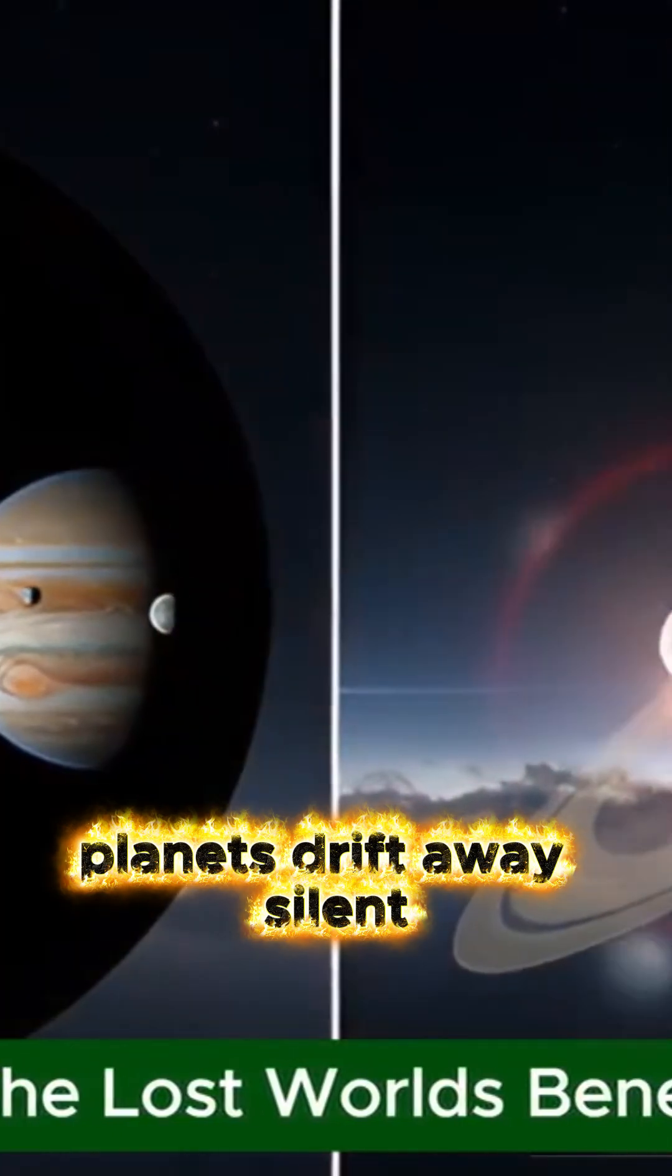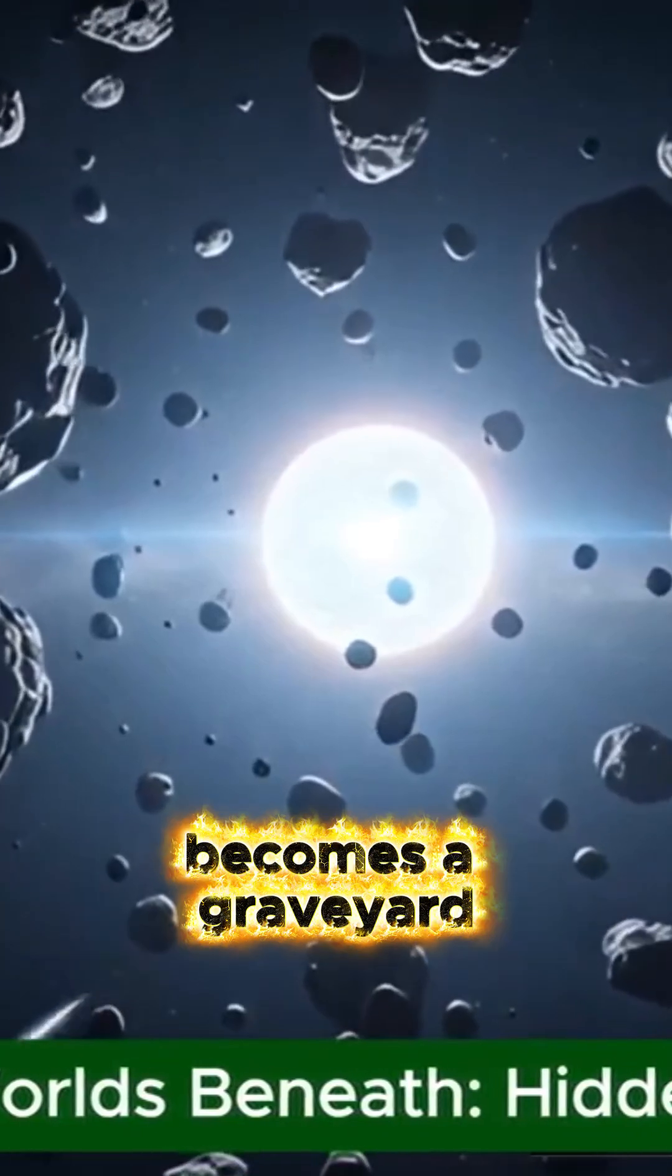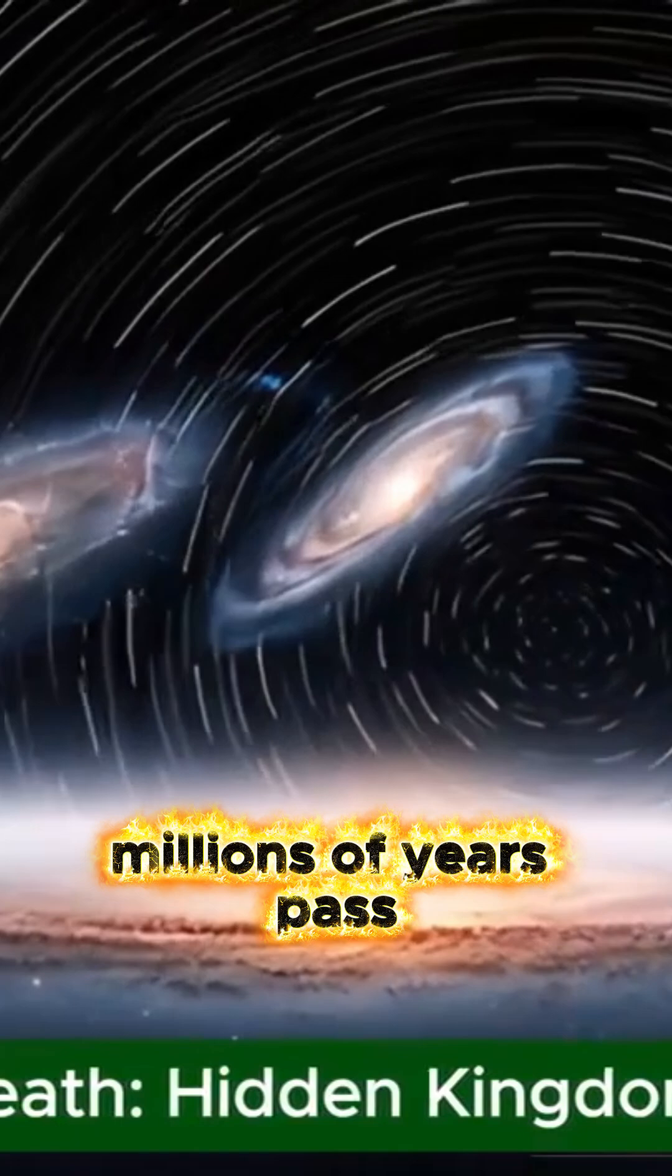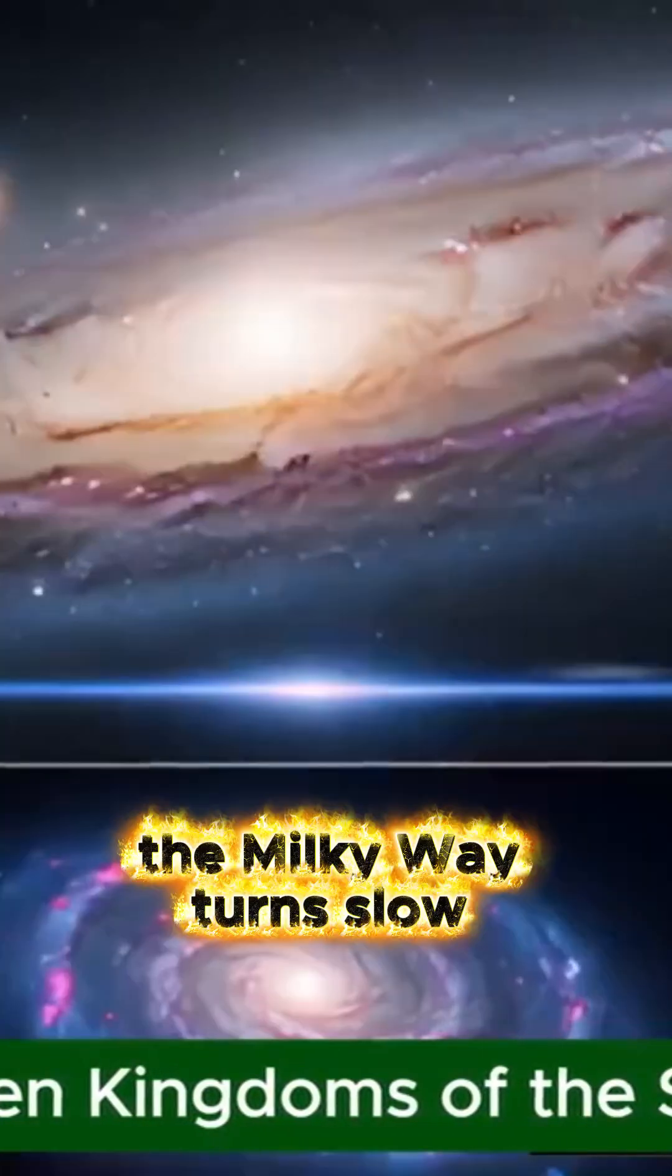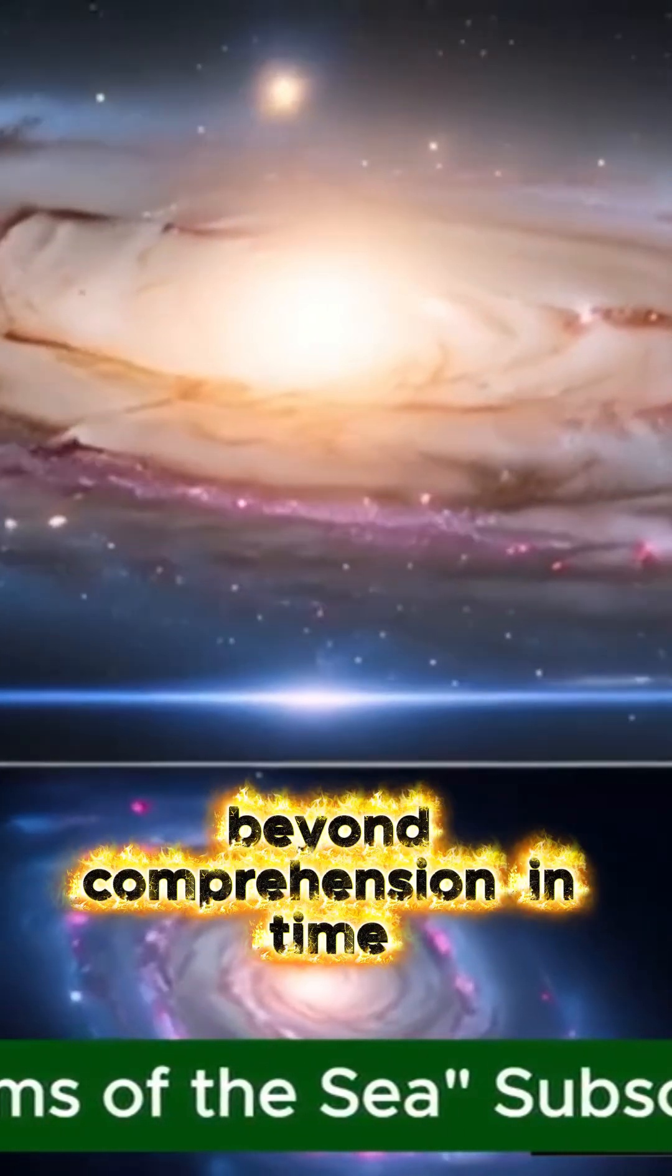Planets drift away, silent orphans of a vanished sun. The solar system becomes a graveyard where light itself begins to die. Millions of years pass in the blink of an eye. The Milky Way turns slow, majestic, ancient beyond comprehension.